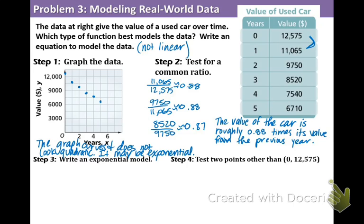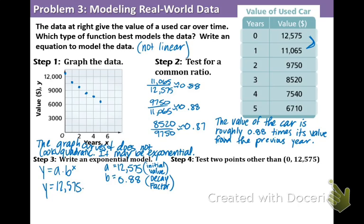Now that we say this is an exponential function, we need to write the equation or model. Remember, exponential is in the form Y equals A times B to the X. The X and the Y stay there. We need to determine what the A and the B are. The A is the initial value, the value of the car at year zero, right when they bought it. That is 12,575. The B value is the growth or decay factor. As you can tell in the chart, the car is decaying in value. We just found out that value. It is called the common ratio, 0.88. Now we can just substitute those two values in and get our equation. Y equals 12,575 times 0.88 to the X. There is our equation.